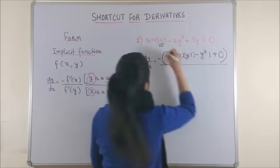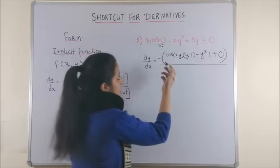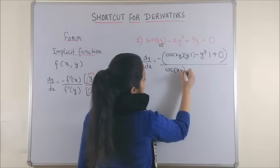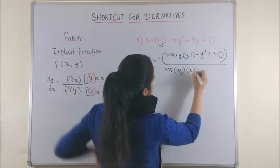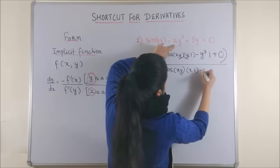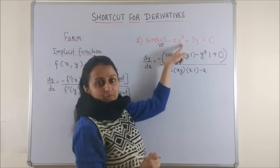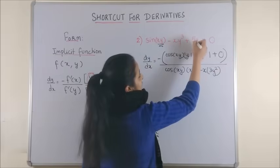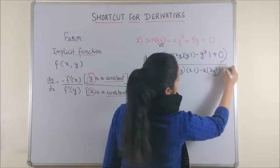Whole upon, derivative of sin xy now with respect to y, so it is cos of xy and this time it will be x into just 1. Here, x is just a constant and derivative of y cube is 3y square and derivative of 5y with respect to y is simply 5.